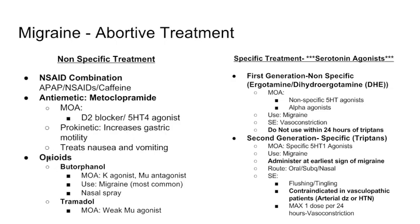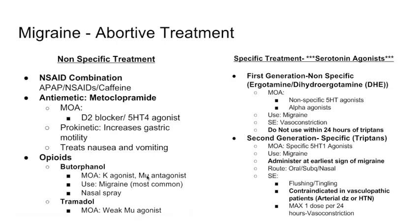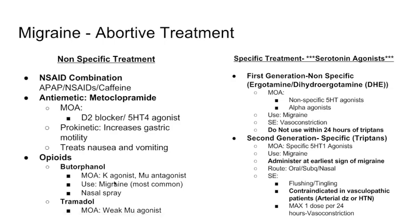There are opioid medications used for migraines. The first one is butorphanol. It's a kappa agonist and a mu antagonist. The key point is that butorphanol is an opioid used for migraine — that's its most common use — and it can come in nasal spray form, so if a patient cannot tolerate oral medication, it can be administered intranasally.